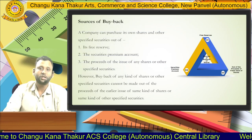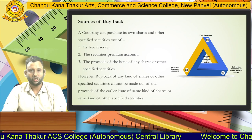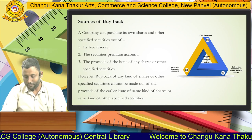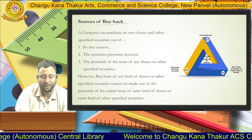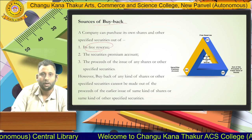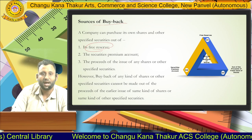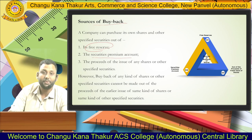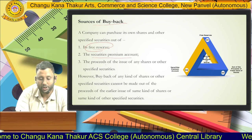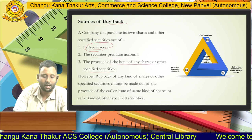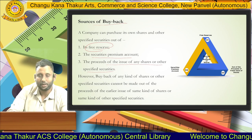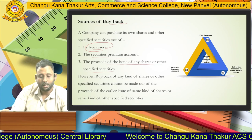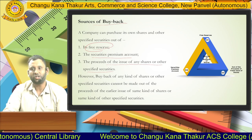What are the sources of buyback? When the company wants to buy back shares, from where does the amount come? The sources of buyback are: first, free reserves — whatever free reserves the company has, they can buy back the shares from them; second, securities premium account; and third, proceeds of the issue of any shares or other specified securities — meaning they can issue shares and they can also buy back shares.